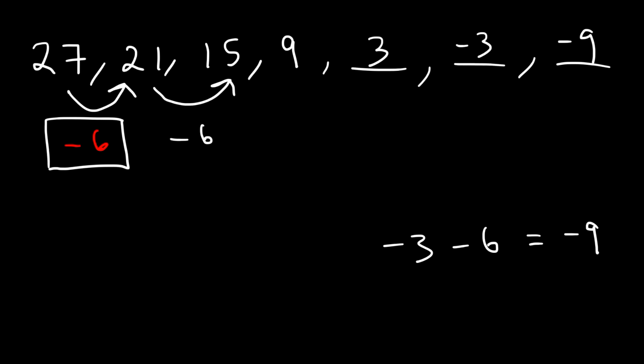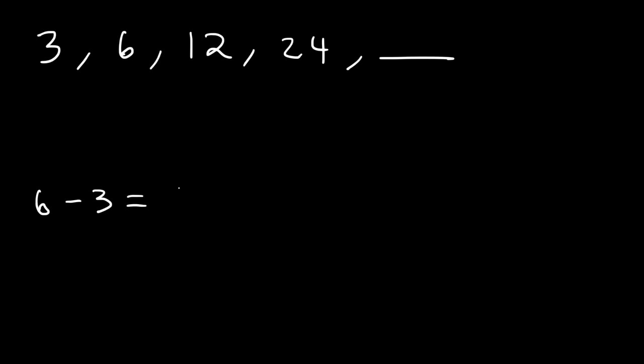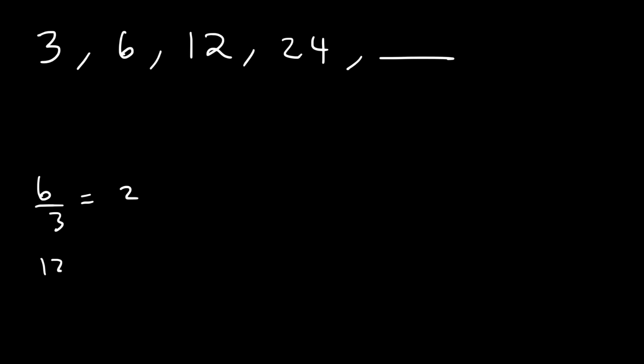Here's a different problem to try. Let's say if we have the sequence 3, 6, 12, and 24. What is the next number in the sequence? First let's see if there's a common difference. If we take the second term and subtract it by the first term it will give us a difference of 3. And if we take the third term and subtract it by the second we're going to get a difference of 6. So that's not going to help us. But let's divide the second term by the first term. 6 divided by 3 is 2. And if we take the third term divided by the second we will get 2. So therefore this sequence has a common ratio of 2.